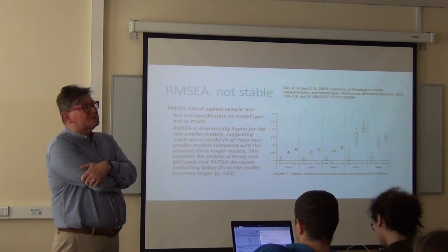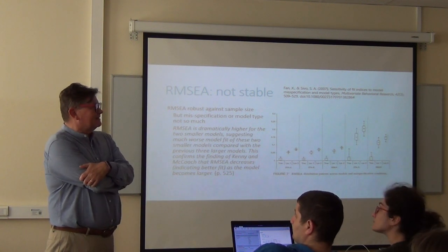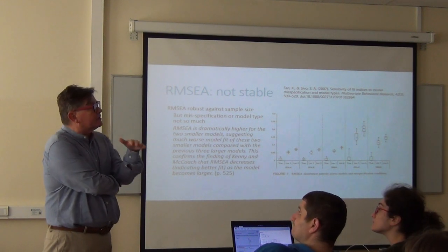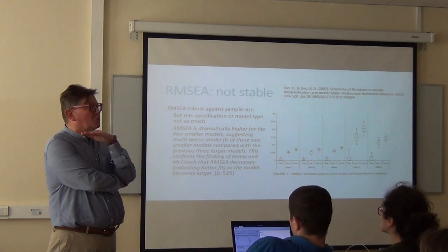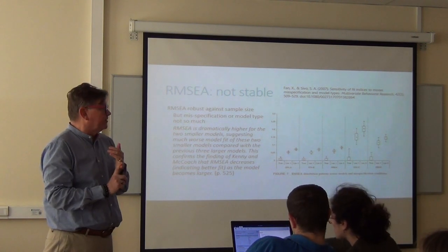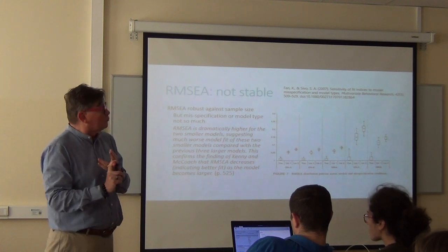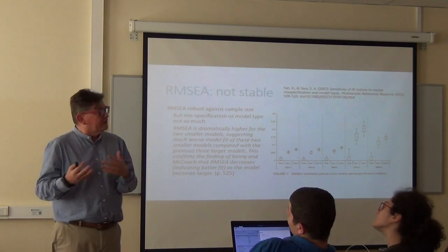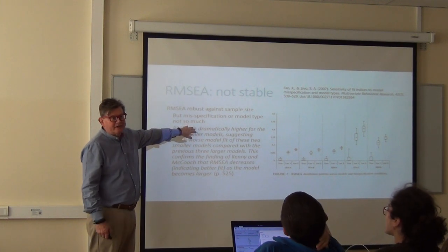We noticed this yesterday in self-study when we tried to manipulate an eight-factor model and tried to eliminate some items or reduce the number of factors, and RMSEA started to increase. RMSEA is not a stable indicator. It may be someone's favorite because they always have small RMSEAs, but it's a bad indicator because it doesn't behave in a consistent fashion — and that's something we want: a consistent way of behaving, no matter the conditions.